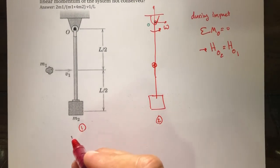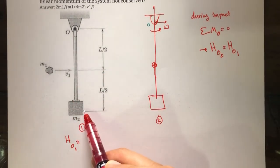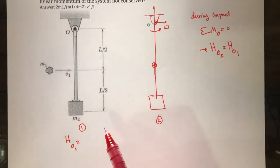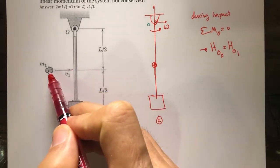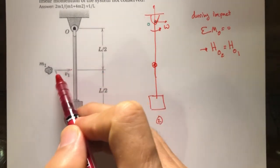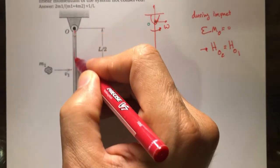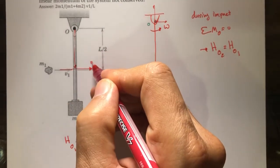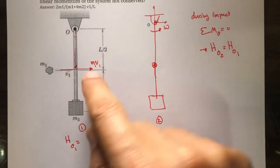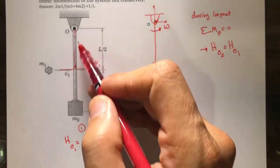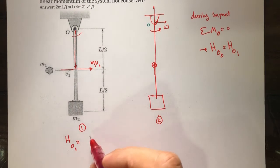What is H_O1? The angular momentum of the bar (mass M2) about point O is equal to zero because it is not moving — velocity is zero, so R cross M2·V is zero. For the clay, it is moving, so its linear momentum is M1·v1. The moment of M1·v1 about point O is R cross M1·v1, where R is L/2. Using the right-hand rule, this cross product is in the counterclockwise (positive) direction, giving a magnitude of (L/2)·M1·v1.